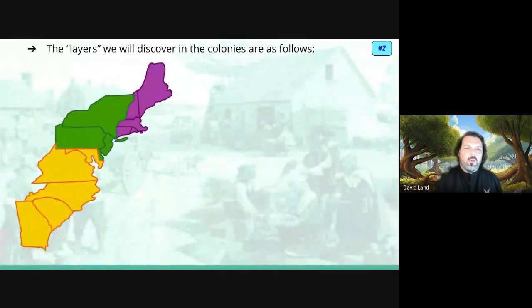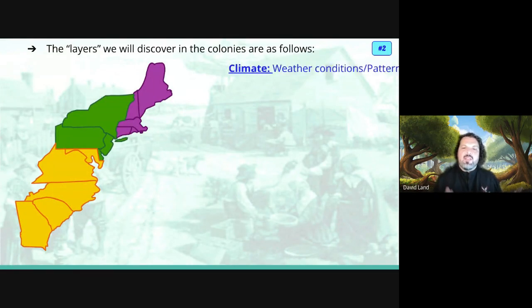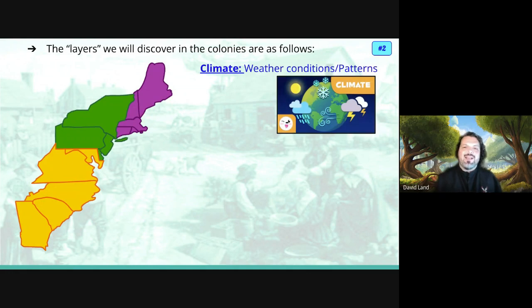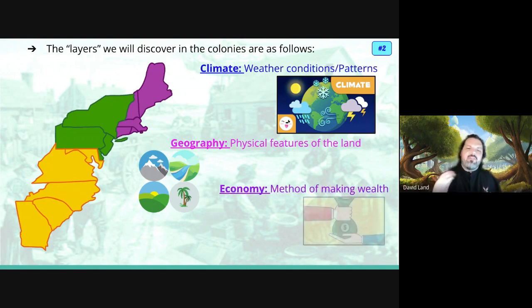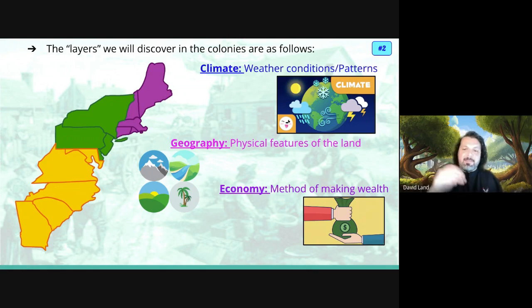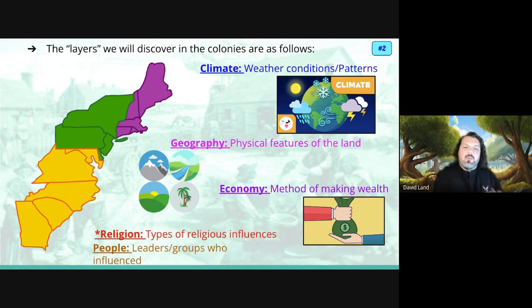The layers we are going to discover on the tour are as follows: climate — meaning what are the weather patterns like; geography — geo meaning land, what are the physical features of the land; and the economy — what is the method of making money. We're also going to look at religion and people in a separate video. In this video, we focus on climate, geography, and economy.